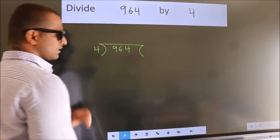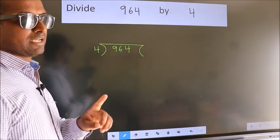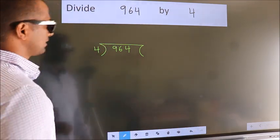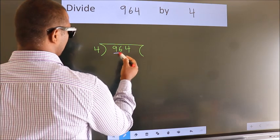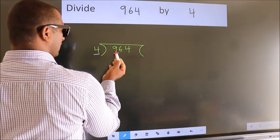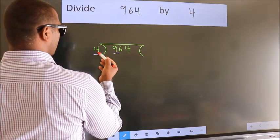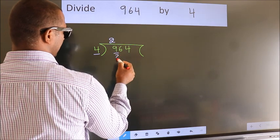This is your step 1. Next, here we have 9, here 4. A number close to 9 in the 4 table is 4 twos, 8.